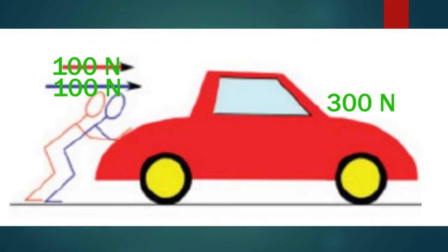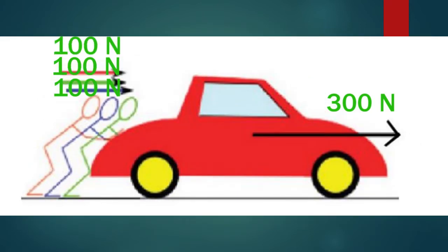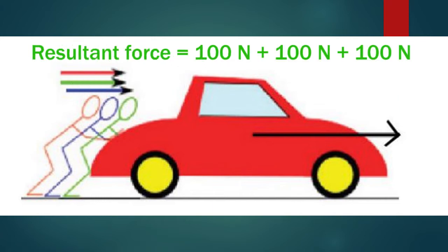Then another person joins him to push the car. The total force applied on the car is 200 Newton, but still the force is not enough to move the car. Then another person joins them, making the total force 300 Newton. As mentioned earlier, if the force is 300 Newton the car starts to move, so when three persons push the car, it moves.